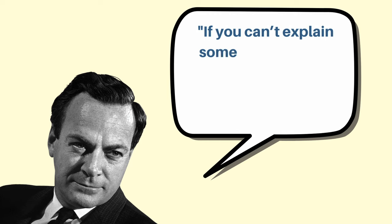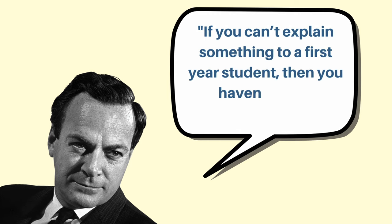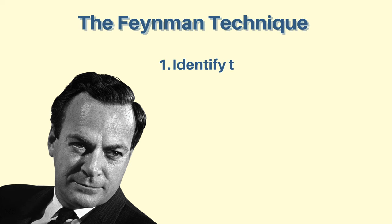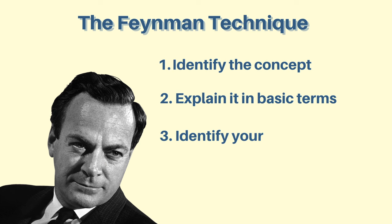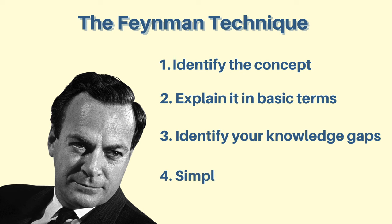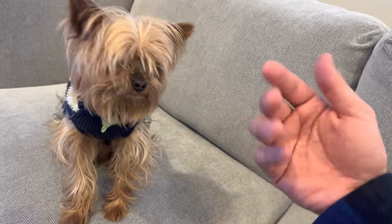The Feynman technique. According to physicist Richard Feynman, if you can't explain something to a first-year student, then you don't really understand it. Here's how it works: first, identify a concept that's really difficult for you to grasp. Then explain the concept to someone in the simplest terms you possibly can. The process of explaining it will expose your knowledge gaps. Once you identify those gaps, go back to the concept and try to simplify it further in terms you can explain to a 12-year-old. The more repetitions you do, eventually you'll fully understand the concept.